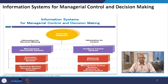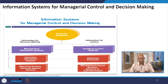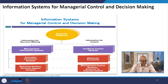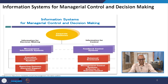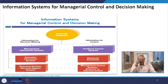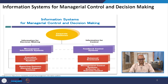Information systems for managerial control and decision making involve corporate databases providing information for decision making and control. MIS includes executive information systems and reporting systems that feed into decision support systems, while feedback control systems include the balanced scorecard and management control systems covering behavior versus outcome control.